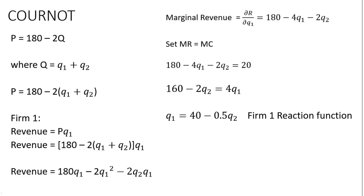Taking the partial derivative with respect to Q₁ gives us MR₁ = 180 - 4Q₁ - 2Q₂. Setting marginal revenue equal to marginal cost of $20 and solving for Q₁: subtracting 20 from both sides and moving the -4Q₁ term over, then dividing through by 4 — 160 divided by 4 is 40, and -2 divided by 4 is -0.5 — we get firm 1's reaction function: Q₁ = 40 - 0.5Q₂.